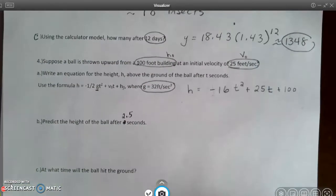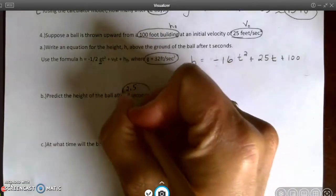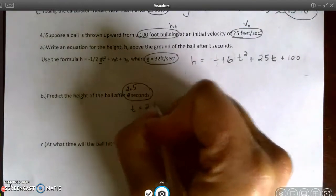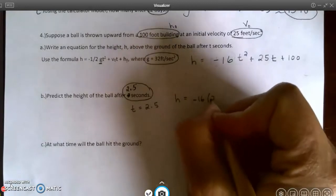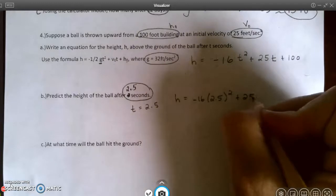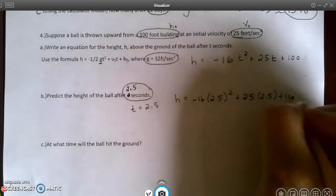Then it asks me to predict the height of the ball after 2 and 1 half seconds. So since I have 2 and 1 half seconds, that's going to be t equals 2.5. So h equals negative 16 times 2.5 squared plus 25 times 2.5 plus 100.